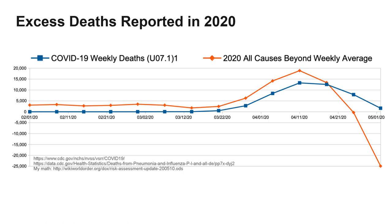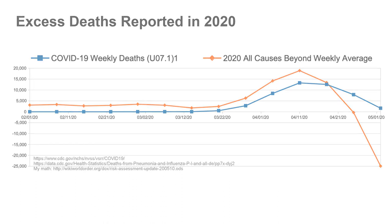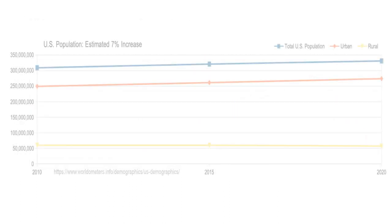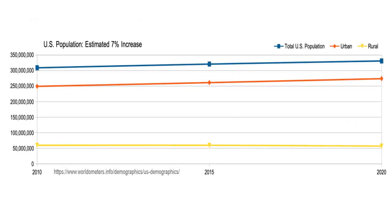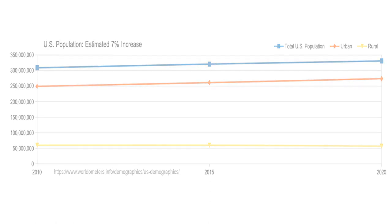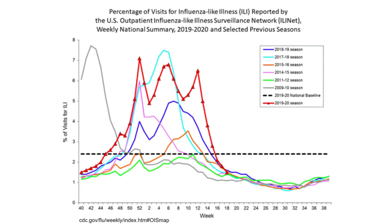Out of some curiosity, I looked up that there's been an estimated 7% increase in the overall U.S. population from 2010 to 2020 with net growth in the urban areas. The next graph is the percentage of visits for influenza-like illnesses reported by the U.S. outpatient influenza-like illness surveillance network. Given the overlap in symptoms between COVID-19 and other seasonal flus, it seems that if COVID-19 were as dangerous as expected, this graph would report dramatically more activity this year.